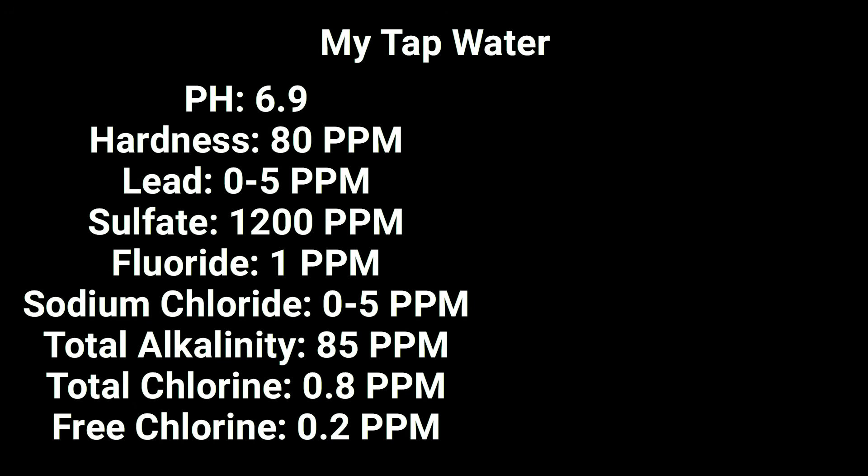Now a quick look at my tap water. You can see the pH 6.9, that's in line with the majority of the bottles of water that I tested that were purified water. Hardness, 80 parts per million, in line with the majority of the bottled waters. Lead, a very small amount, between 0 and 5 parts per million. Sulfate, very similar to the bottled water at 1,200 parts per million. Fluoride, estimating around 1 part per million. Sodium chloride, between 0 and 5. Total alkalinity, not bad, 85 parts per million. Total chlorine, low, 0.8 parts per million. And free chlorine at 0.2 parts per million. All the other tests were negligible, so the tap water in my house is not too bad.